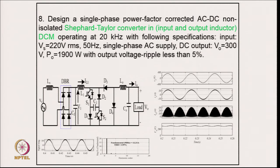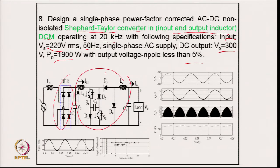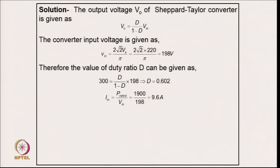Example 8: design a single phase power factor corrected AC-DC non-isolated Zeta converter with input and output inductors operating in DCM at 20 kHz. Specifications: 220 V, 50 Hz single phase AC supply, DC output 300 V, power 1900 W, output ripple less than 5 percent. After designing in DCM and simulating, the supply current is in phase with supply voltage and close to sinusoidal. The input inductor currents are discontinuous, the output voltage is regulated, and the supply current THD is 3.59 percent.